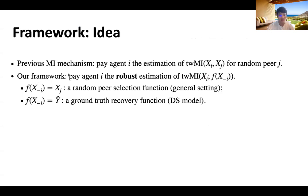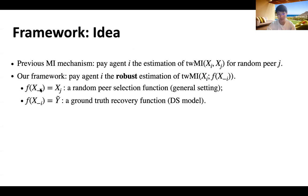The previous mutual information mechanism pays agent i an estimation of the termwise mutual information between agent i and an arbitrary peer j. We provide a framework where we pay agent i a robust estimation of the mutual information, generalizing the random peer selection to a function f. In the first case, if f is a random peer selection function, we reduce to the previous approach. In the second case, f could be a ground truth recovery function, which collects agents' reports and robustly learns the ground truth. As an example, we consider the DS model.